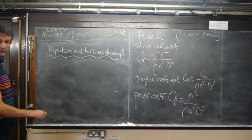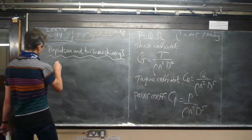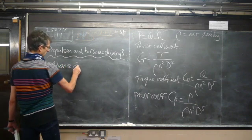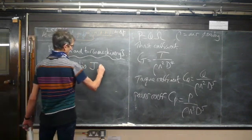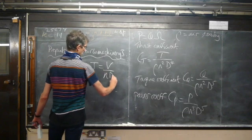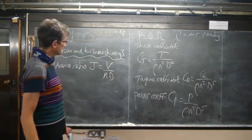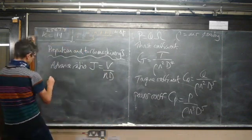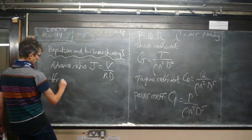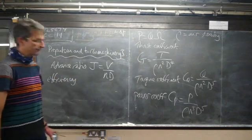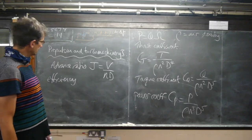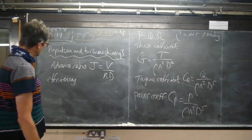Advance ratio is a non-dimensional flight speed. The other one is efficiency - how good is the propeller at converting the applied power into useful thrust power?